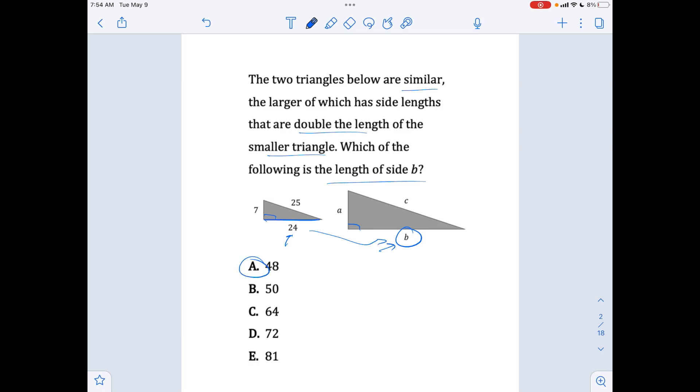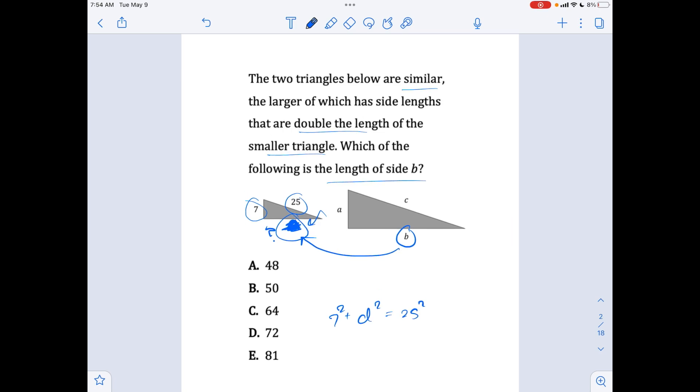Now the way they could have made this difficult is let's say they give you the same problem and they didn't give you this number. So you think, okay, I'm just going to take this number and double it, but I don't know what that number is. So in that case, you'd have to take the Pythagorean theorem and solve for that side. So you do seven squared plus d squared equals 25 squared. So you solve for d, if you do the math, you'll get d equals 24. And then you can multiply that by 2 equals 48. So it's just a typical example of what this could look like.